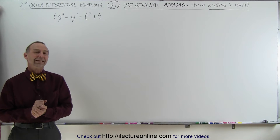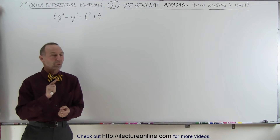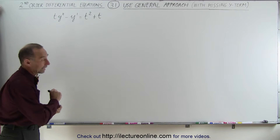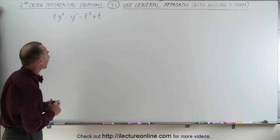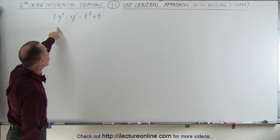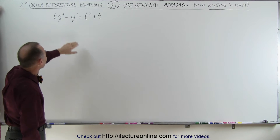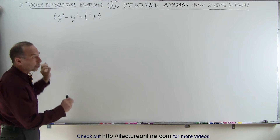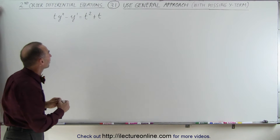Welcome to Y Lecture Online. Here we have another example where we're going to use that general approach. The reason why we can use that is because the Y term is missing. This is not a homogeneous equation — we do have a function on the right side of the equal sign. It is second order, and what we're going to do first is put it into the general format.